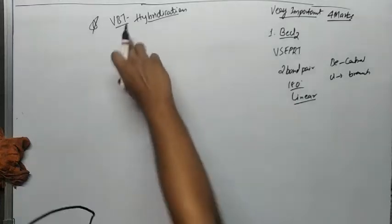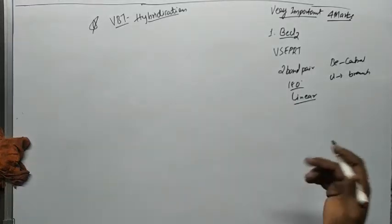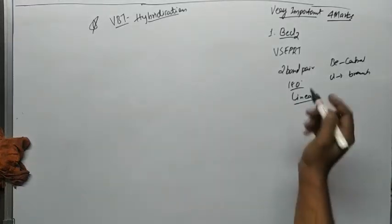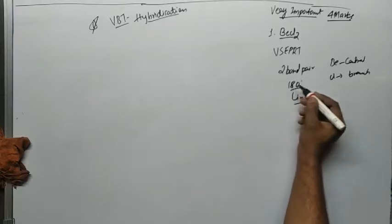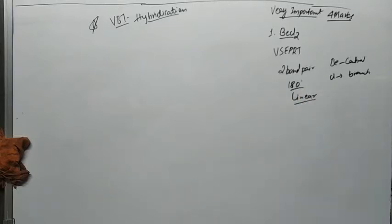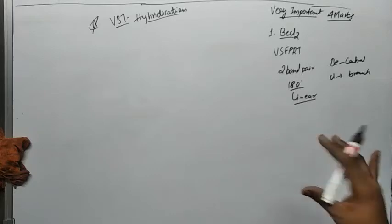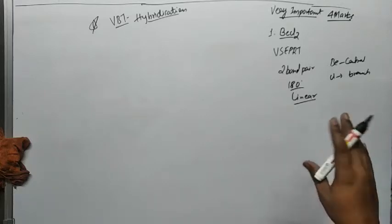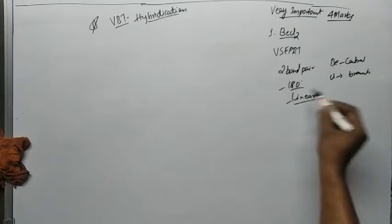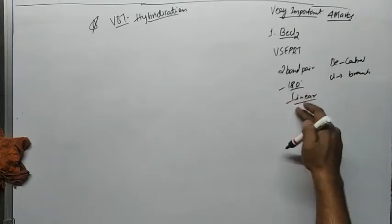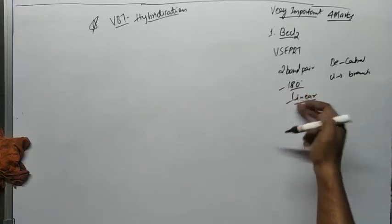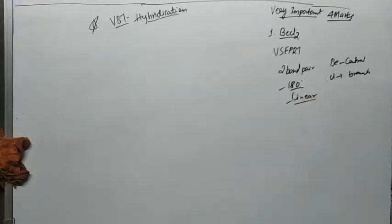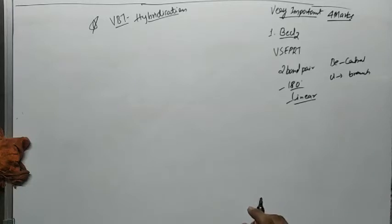VBT theory explains the drawbacks of VSEPR theory while also incorporating its points. The bond angle of 180 degrees and the linear shape remain the same in VBT theory, but the formation of the molecule will be explained with the help of orbitals.